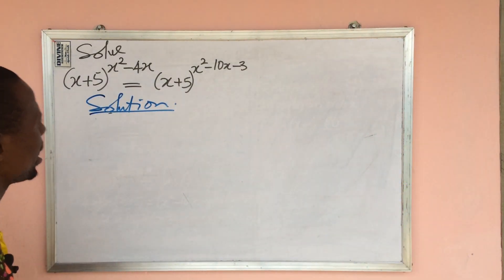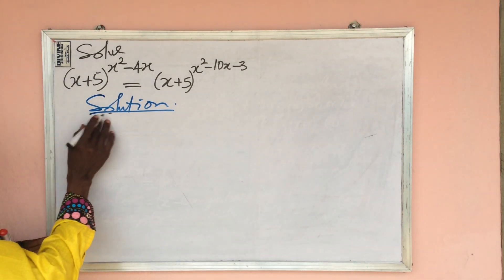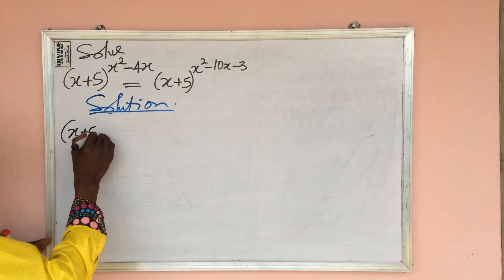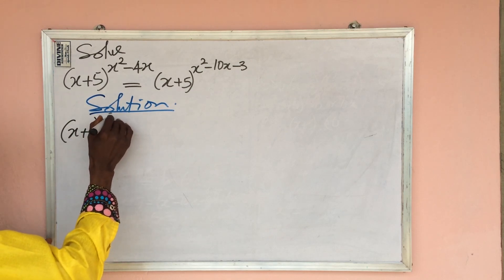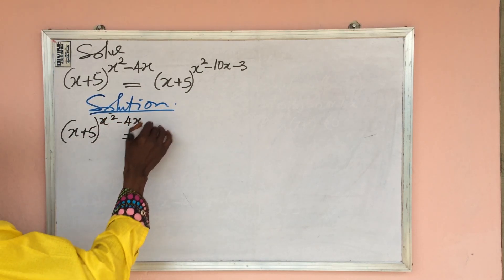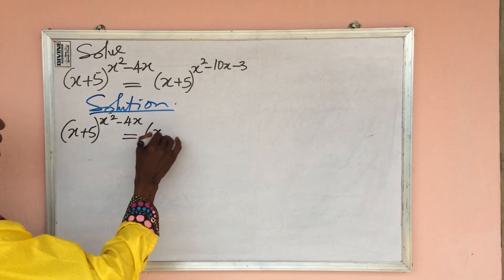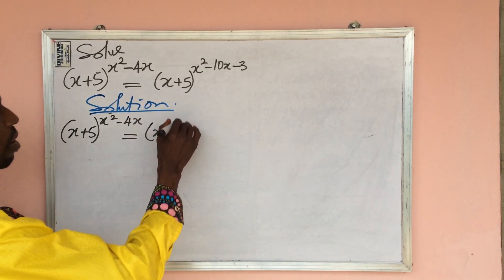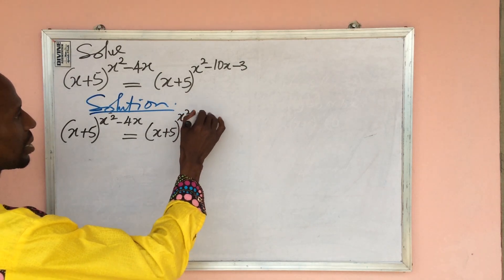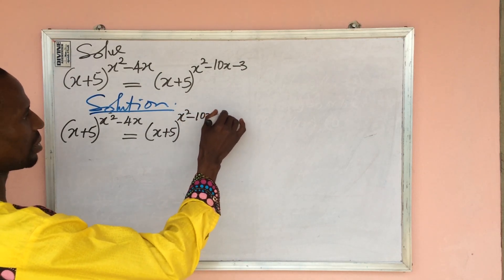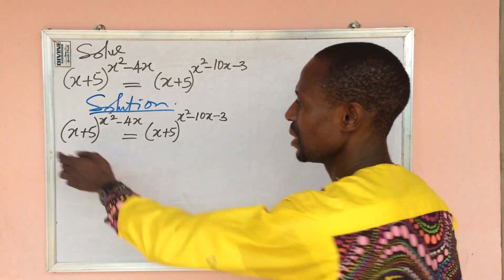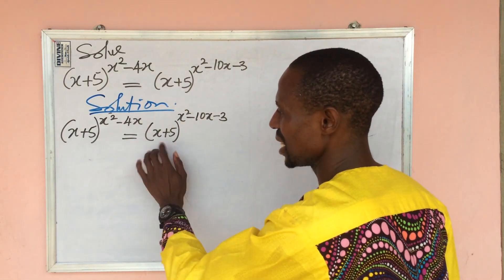So we take down our equation, which says: bracket (x + 5) to the power of (x² - 4x) equals bracket (x + 5) to the power of (x² - 10x - 3). Like I told you, the bases are the same, but if we go by that law we are going to run into some trouble.